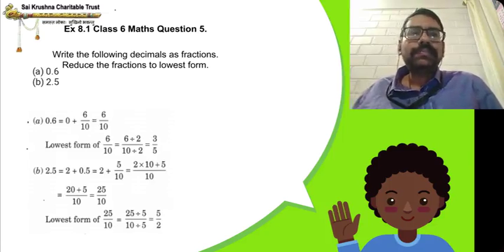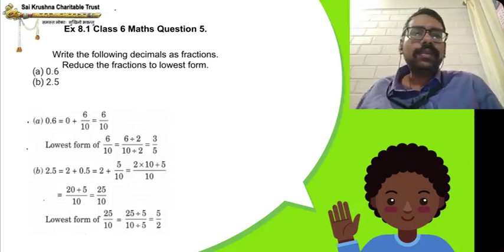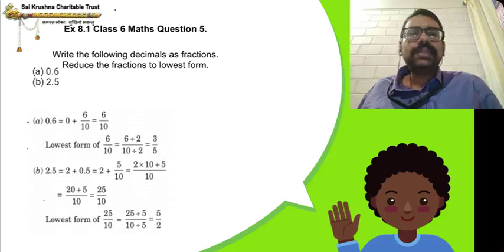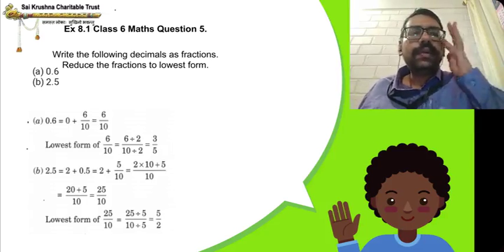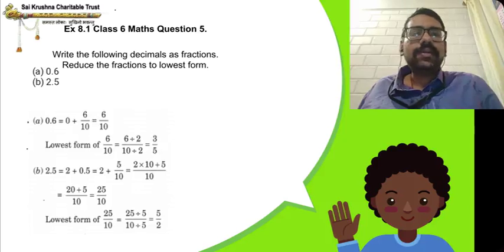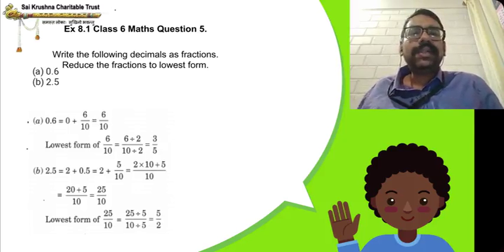2.5 can be written as 2 plus 0.5. 0.5 can be written as 5 by 10. So, 2 can be written as 2 by 1 — because any number divided by 1 is always equal to the same number. You want to convert both fractions to like fractions. The next fraction is 5 by 10, and 10 is in the denominator. So in 2 by 1, if you want to get 10 in the denominator, you multiply 1 by 10. So, 2 into 10 is 20 by 10. Then 20 by 10 plus 5 by 10 gives 25 by 10.